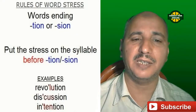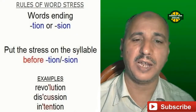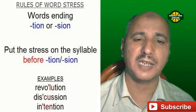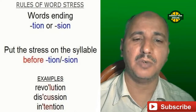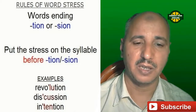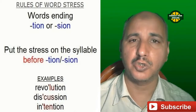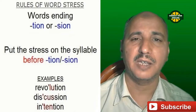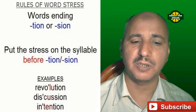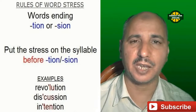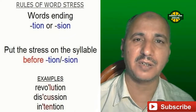Words ending in -TION or -SION: the stress should be placed on the syllable before -TION or -SION. For example: 'revolution' — the syllable before -TION is stressed: 'revo-LU-tion.' Also: 'discussion' and 'intention.' As you see, the letters in red are stressed, and these are the syllables before -TION or -SION.